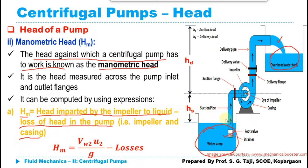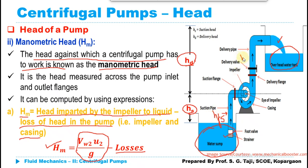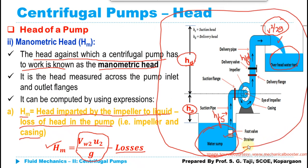The total head generated by the impeller is given by the expression VW2 multiplied by U2 divided by G. Deducting the losses from this gives the manometric head. Alternatively, you can compute it by adding all heads: suction head plus delivery head, plus frictional losses in the suction pipe HFS, plus frictional losses in the delivery pipe HFD, plus the excess velocity head at the outlet VD squared upon 2G. Adding all these heads gives the manometric head.